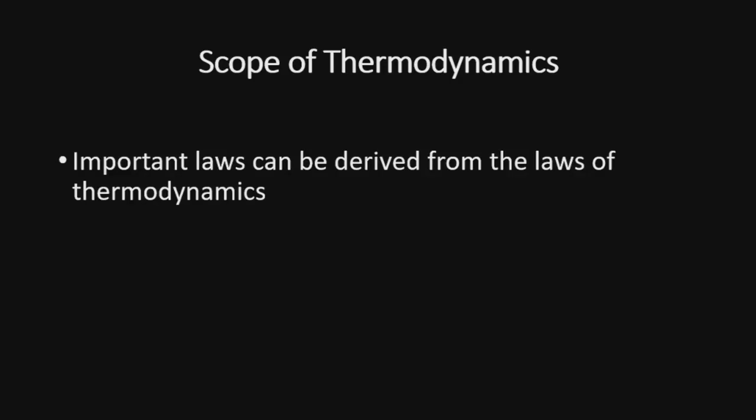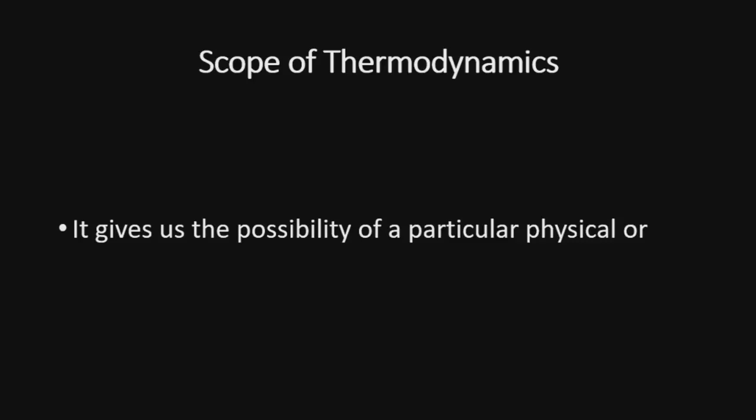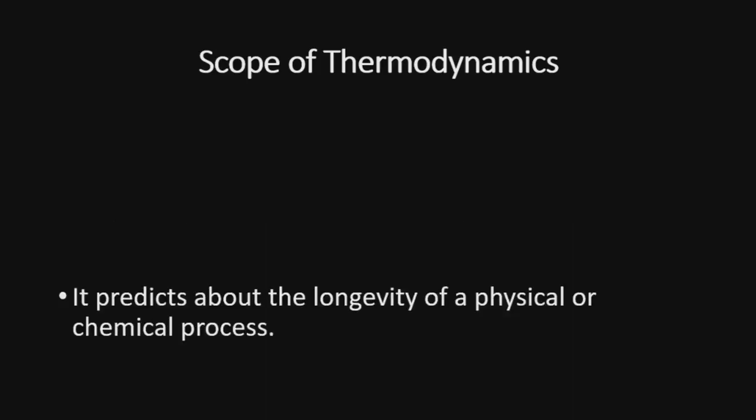Thermodynamics is used to derive important laws like the laws of physical chemistry and the phase rule. Distribution laws can be derived from the laws of thermodynamics. It tells whether a particular physical or chemical change can occur or not under a given set of conditions of temperature, pressure, and concentration. It also helps in predicting how far a physical or chemical change can proceed until equilibrium conditions are established.